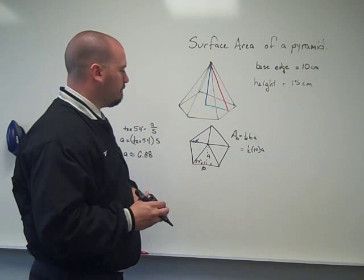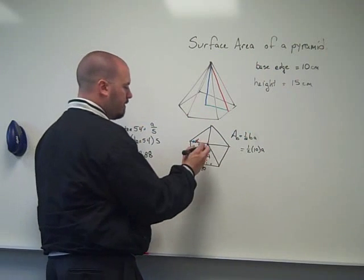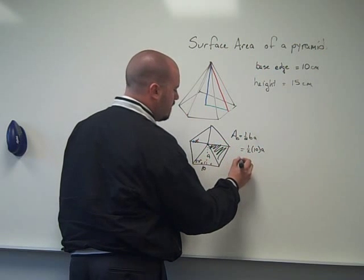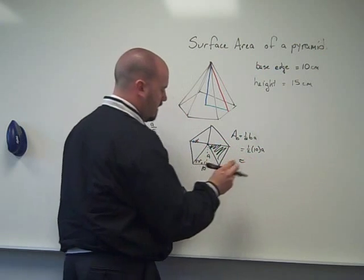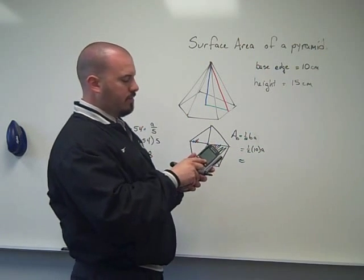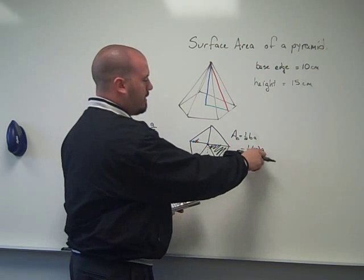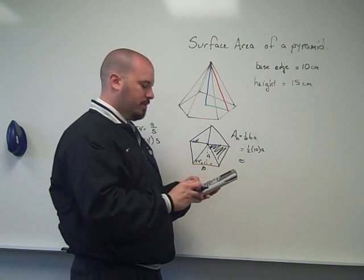To find my area of one of these triangles, the half of 10 times the apothem, and my apothem, my 6.881909602, etc., is stored in the calculator. So I'm just going to multiply by 10 times a half, which is really times 5.